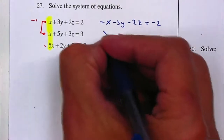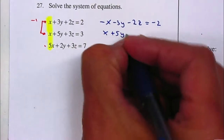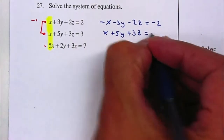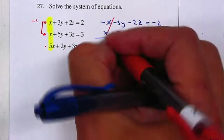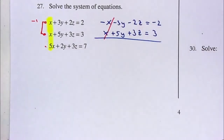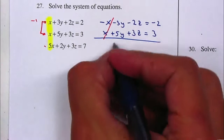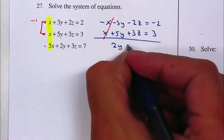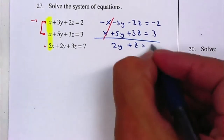The second equation stays the same. I'm going to cancel the X's. Adding them gives me 2Y plus Z is equal to one.